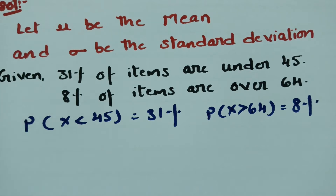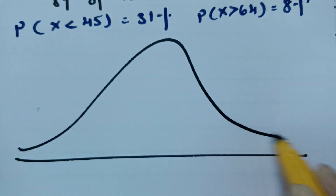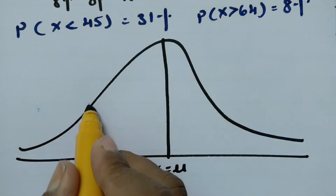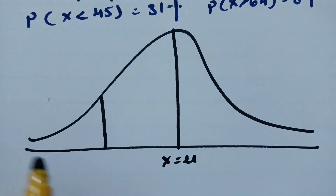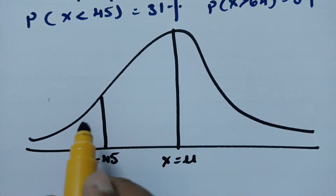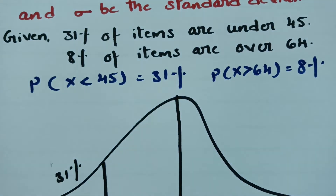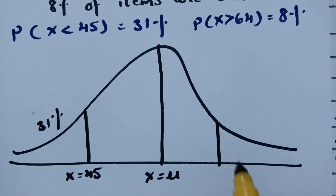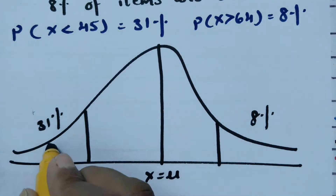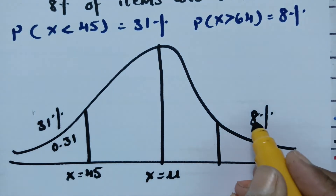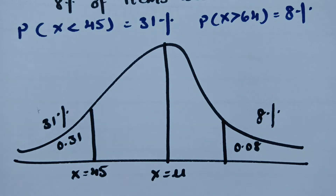We use the normal distribution curve. The center is x = mu. 31% of the items are under 45, so we represent that region towards the left side of the ordinate at x = 45 — this is 31%. And 8% of the items are over 64, represented on the right side of the ordinate at x = 64. Converting: 31% = 0.31 and 8% = 0.08.